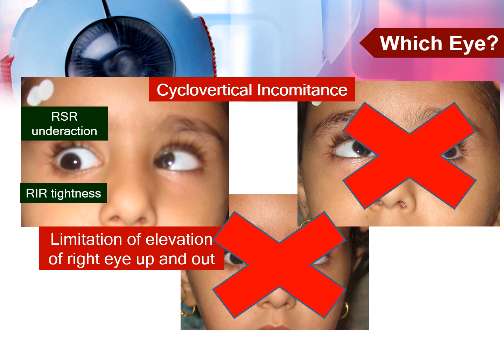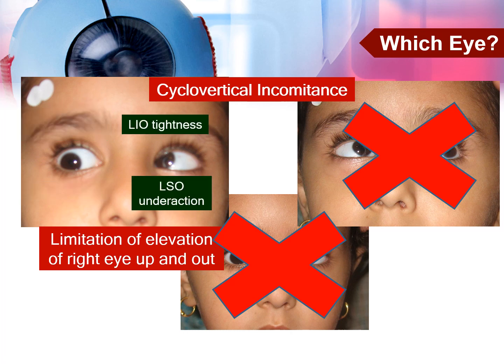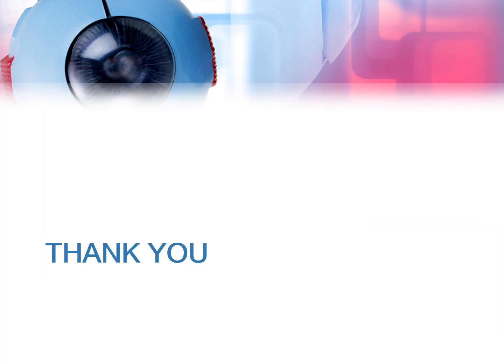If we assume the problem is that the right eye doesn't go up enough, we need to know whether this is caused by a right superior rectus under action or a right inferior rectus tightness. And if the problem is that the left eye doesn't go all the way down, we still need to know if this is caused by a left superior oblique under action or a left inferior rectus tightness. How we are going to answer these questions will be discussed in the next presentations.